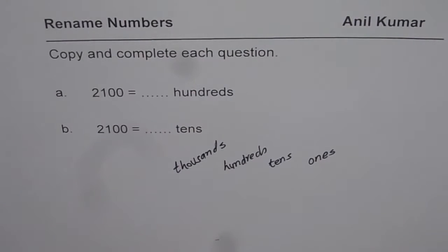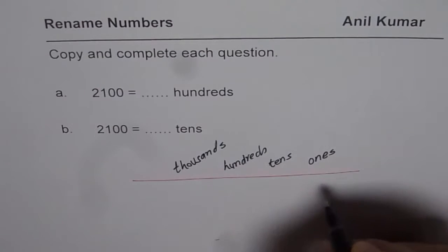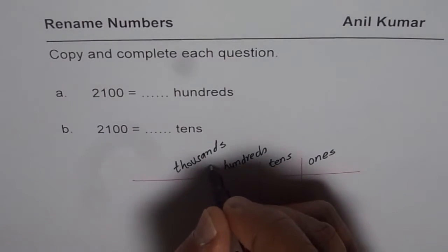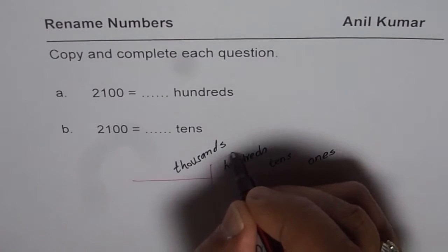So on a place value chart we are taking four digits at present. It's because 2100 is a four digit number. That's the whole idea.